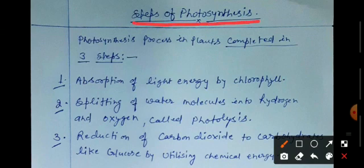Photosynthesis is the process of making food by green plants. The whole process is completed in three steps.